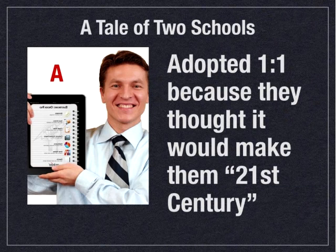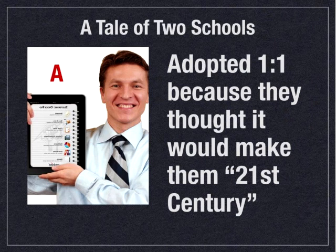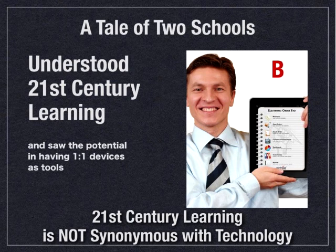School A adopted a one-to-one because they thought it would make them — notice the quotation marks — 21st century. They said, well, iPads or Chromebooks seem to be the trend in education, so we'll do that and we'll be 21st century. School B truly understood what 21st century was all about. They also did some research and knew that having one-to-one devices might help them with their 21st century learning initiative. They also knew that having devices is not synonymous with 21st century learning.